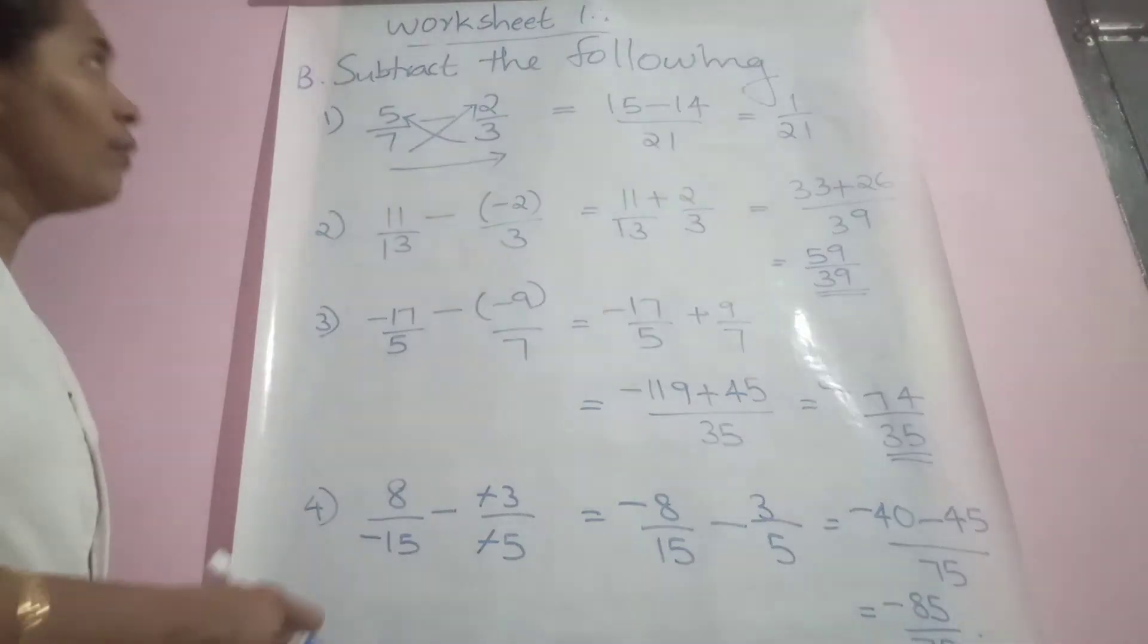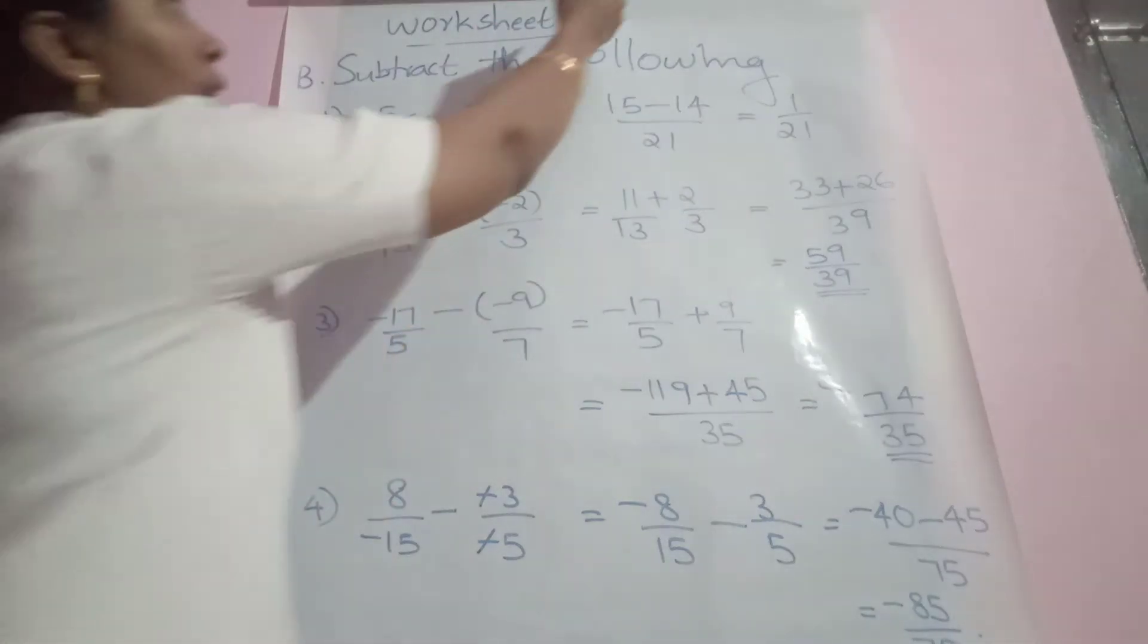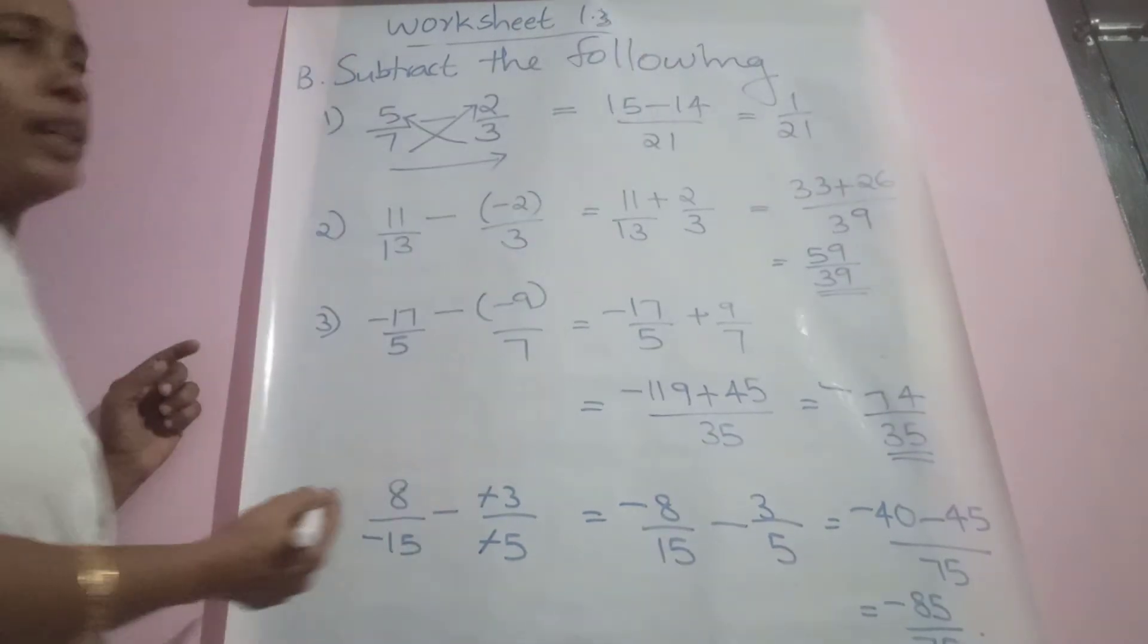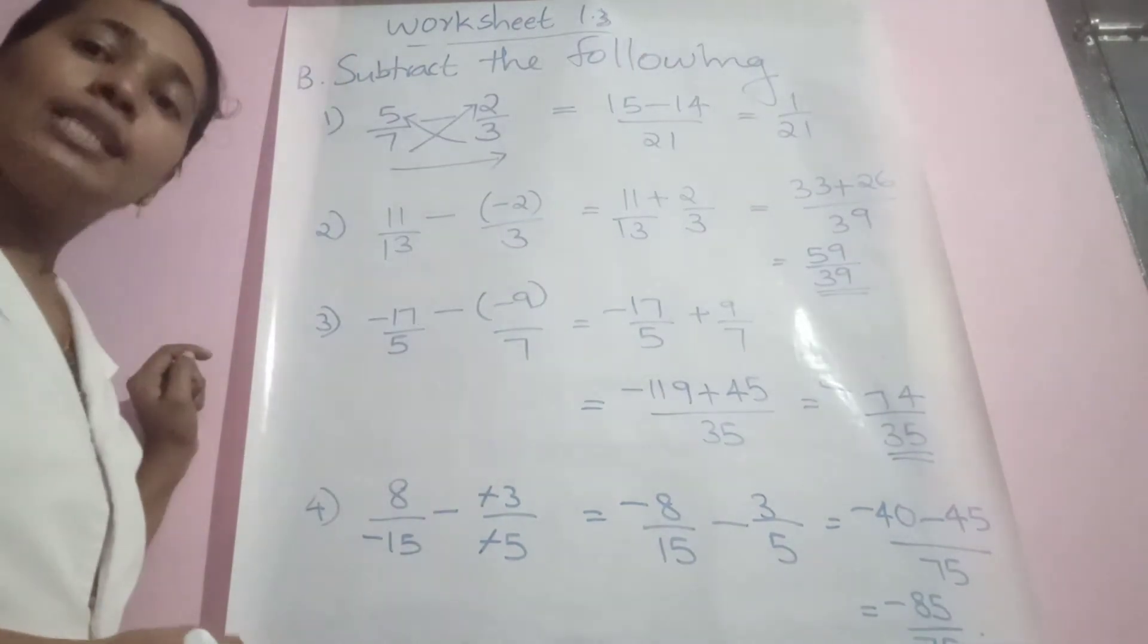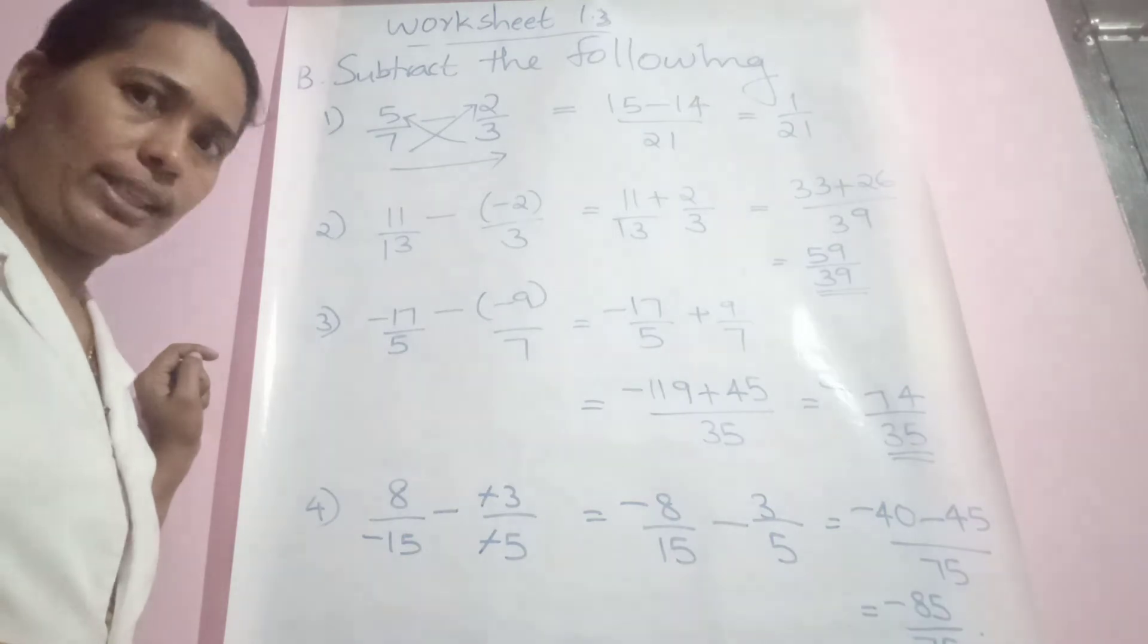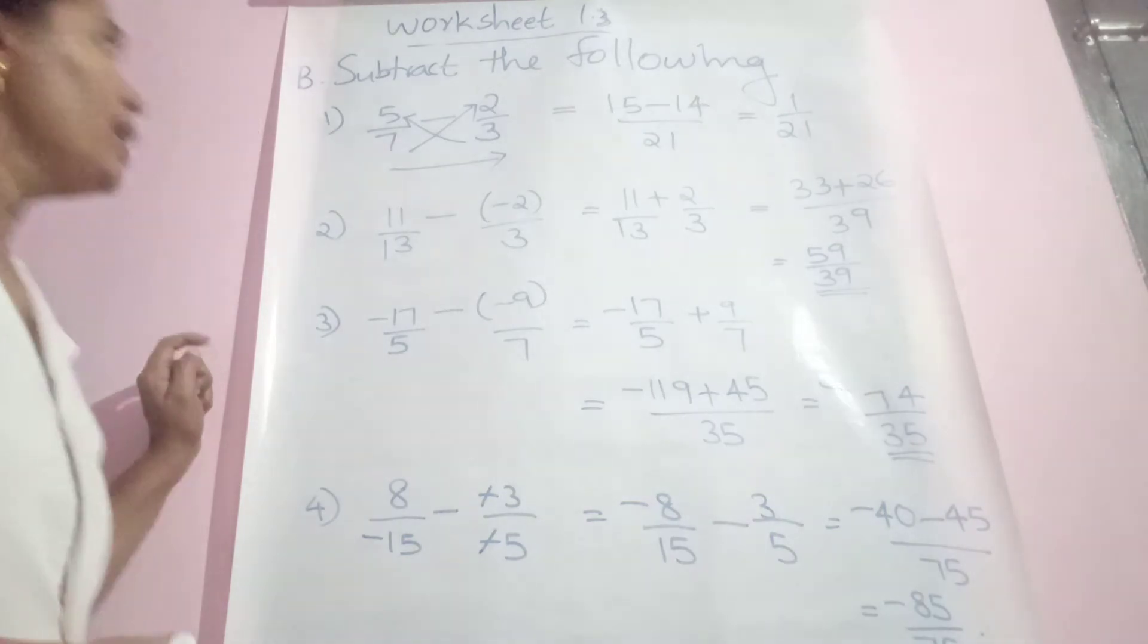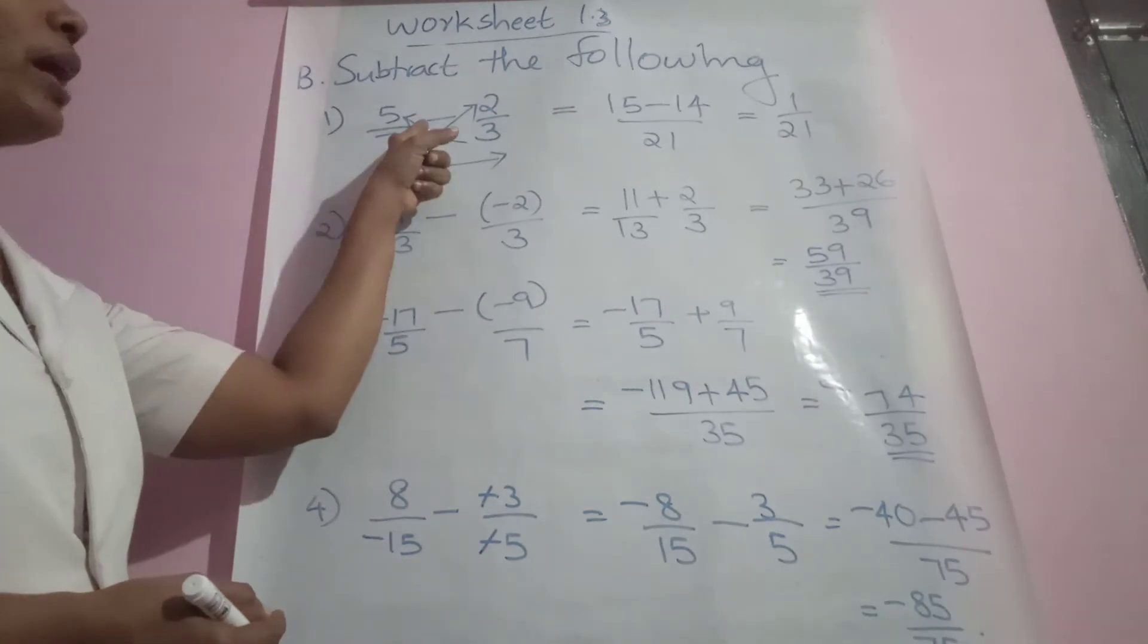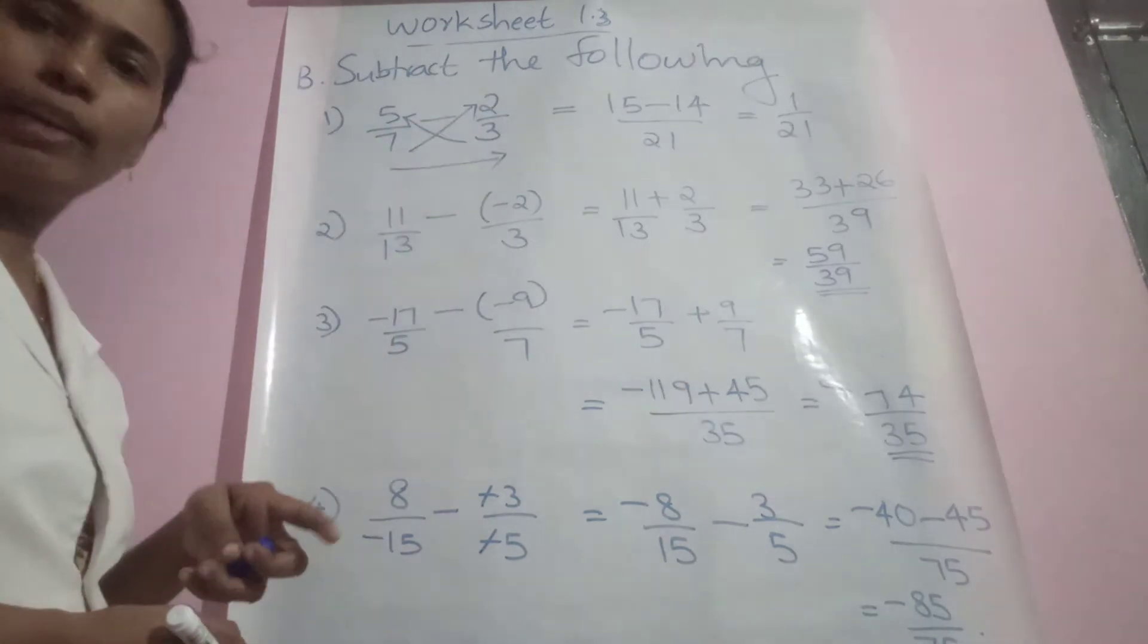Let us continue with worksheet 1.3, question B section: subtract the following. Question number 1 is 5/7 minus 2/3.